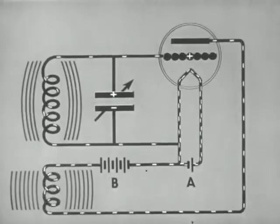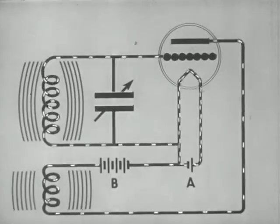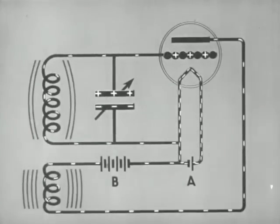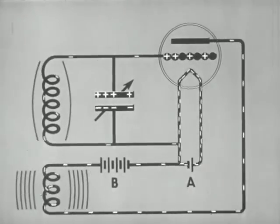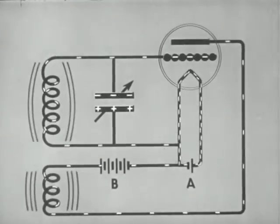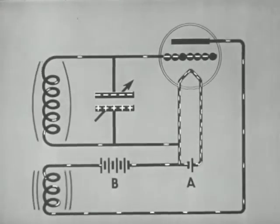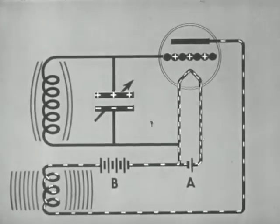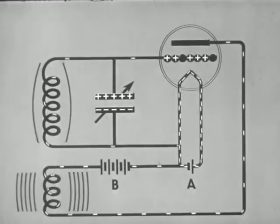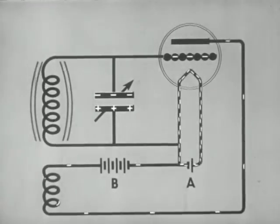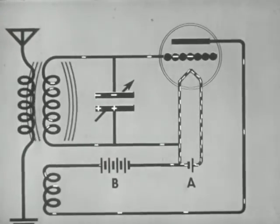The frequency at which the current alternates is determined by the resonant frequency of the grid circuit, which may be controlled by a variable condenser. The current may alternate millions of times per second. Direct current from the B battery is thus changed to a high-frequency alternating current in the grid circuit. The grid circuit of such an oscillator may be coupled to an antenna in the sending station. Energy is transferred by induction from the grid circuit to the aerial ground circuit.